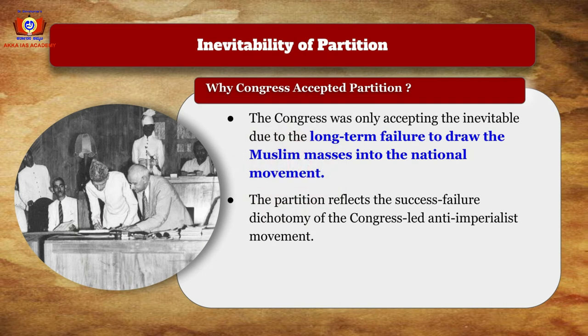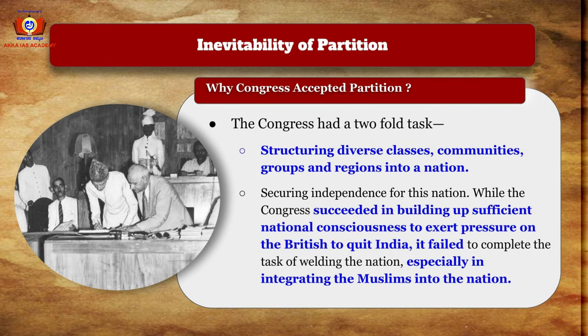Congress was only accepting the inevitable partition due to its long-term failure to draw Muslim masses into the national movement. The partition also reflects the success-and-failure dichotomy of the Congress-led anti-imperialist movement. The Congress had a two-fold task: structuring diverse classes, communities, groups, and regions into a nation, and securing independence. While it succeeded in building sufficient national consciousness to pressure the British to quit India, it failed to complete the task of welding the nation, especially integrating the Muslims.